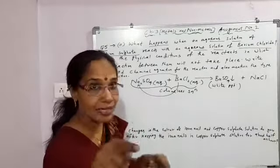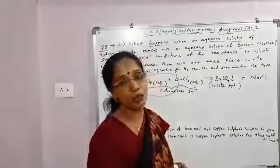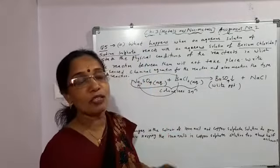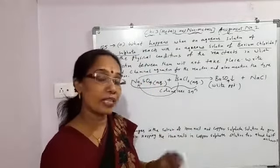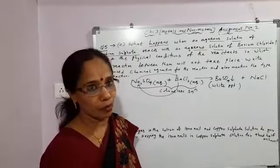So what type of reaction is this? Double displacement reaction. And in this double displacement reaction, a precipitate is formed. So this double displacement reaction is also called a precipitation reaction.